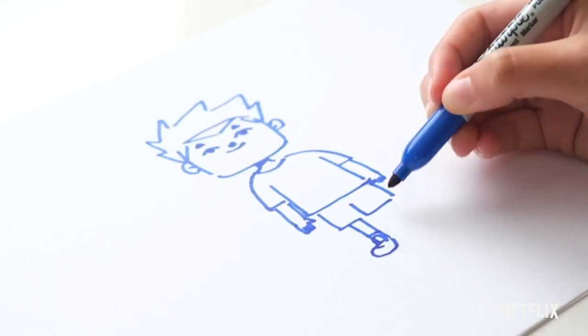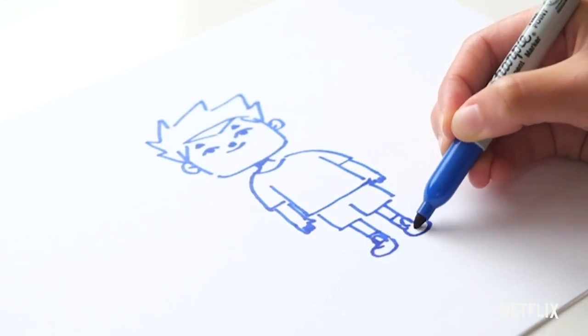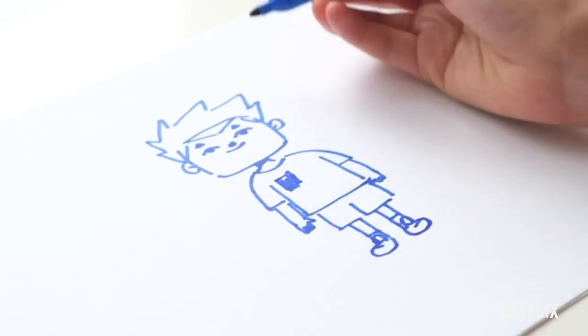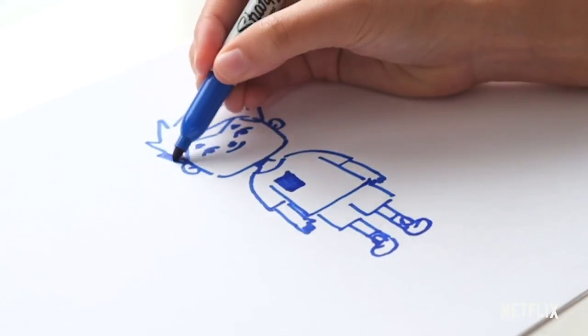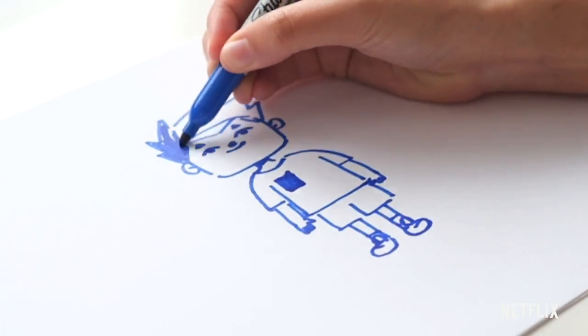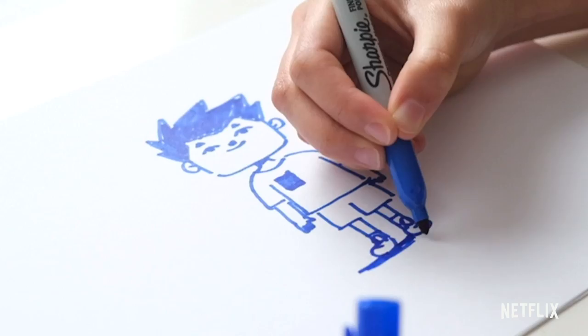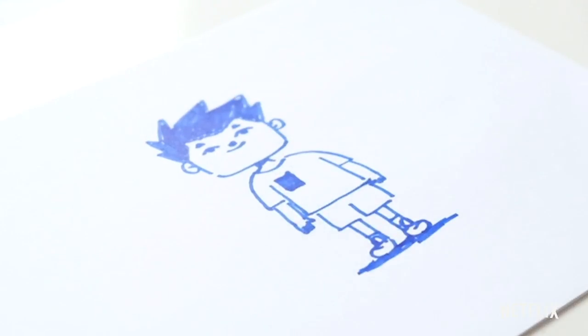And he wears little rounded sneakers. He has a pocket on his shirt. You can just fill in his hair. And yeah, that's how you draw Peter.